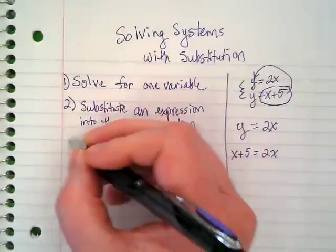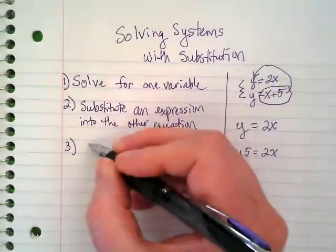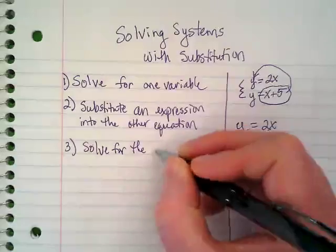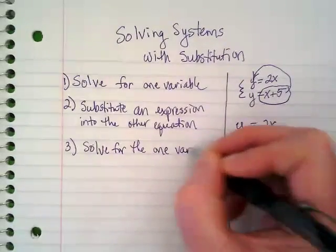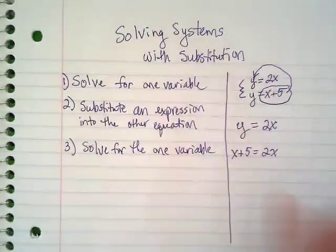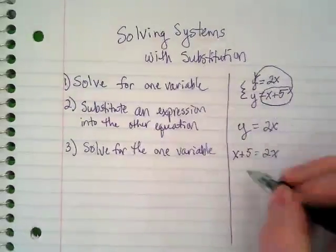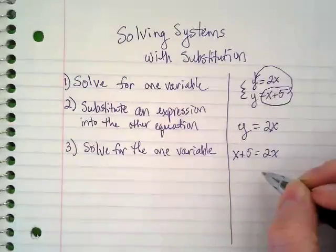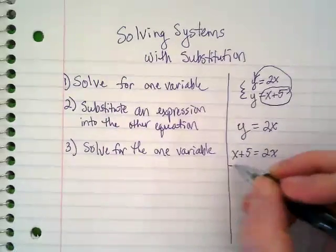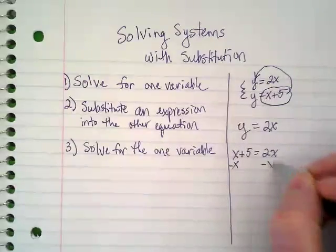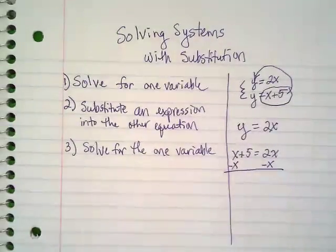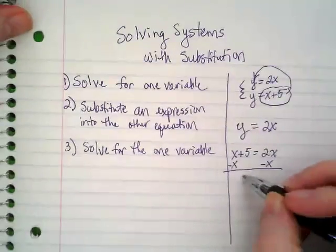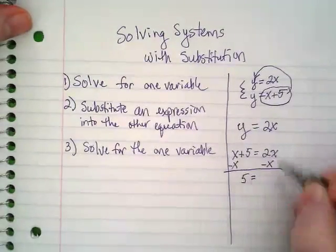And then, what do you think step 3 is? Step 3 is solve for the variable. And the variable we're going to get out of this one is the x. So I want to subtract this x and get it over here, because that's combining like terms. That's going to leave 5 equals x.